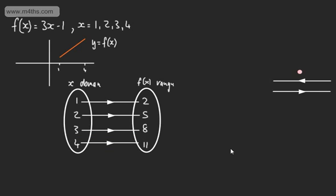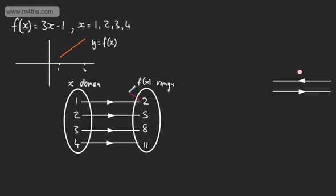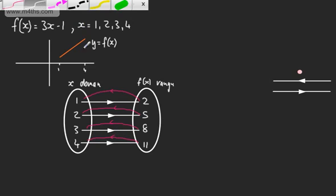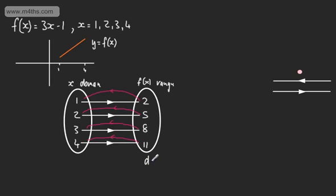What we want to do is find a function that undoes this process, such that each value in the range is mapped back to the original value in the domain, and that value only. This is what we call the inverse function. With the inverse function, the range of the original function becomes the domain of the inverse, and the domain of the original becomes the range of the inverse.